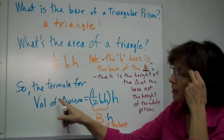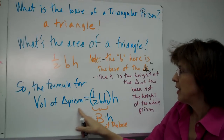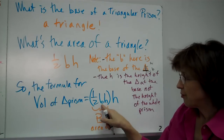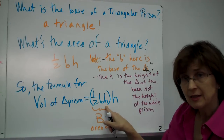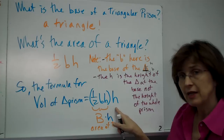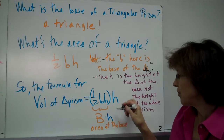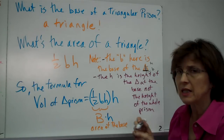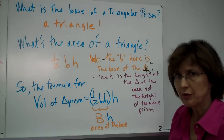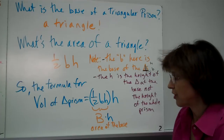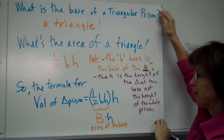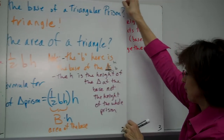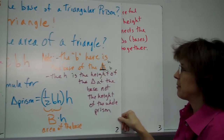The formula for the volume of a triangular prism is the area of the base — but the area of the base is one half base times height — times the height of the whole prism. If you want to use capital H for that, you can. You don't see that very often in the books, but you could use it for yourself to help you. Now let's get some examples and work through them.